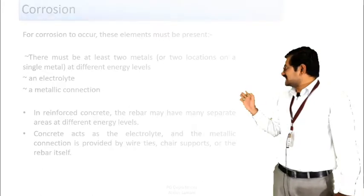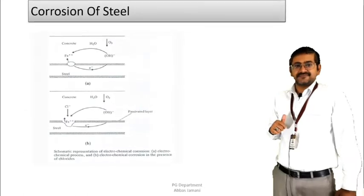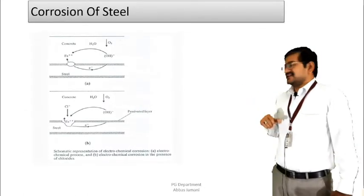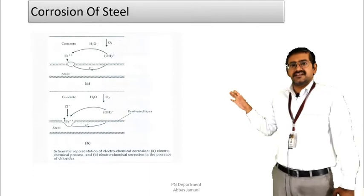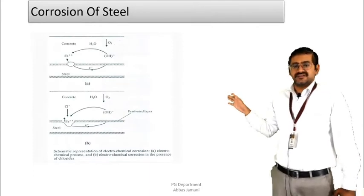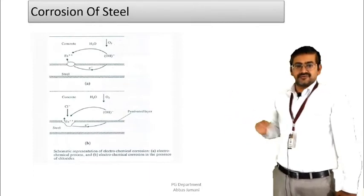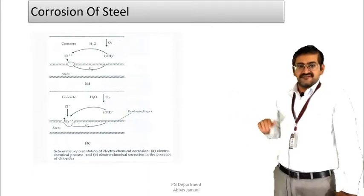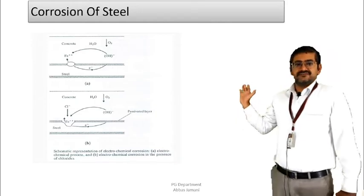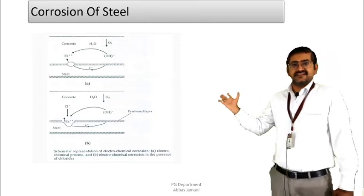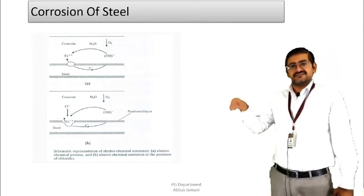If you look at the schematic representation, you can see two stages taking place. The first stage is the electrochemical process, and the second is the electrochemical corrosion. First of all, there is a passive layer that is going to be formed on the surface of the reinforcement.